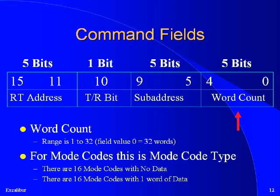The final field is the word count or mode code field. For a regular message, this field indicates the number of words to be transferred; a 0 indicates 32 words are to be transferred. All non-mode messages must contain at least one data word. For mode codes, this field indicates the type of mode code. Some types of mode codes are accompanied by a single data word; all others contain no data.